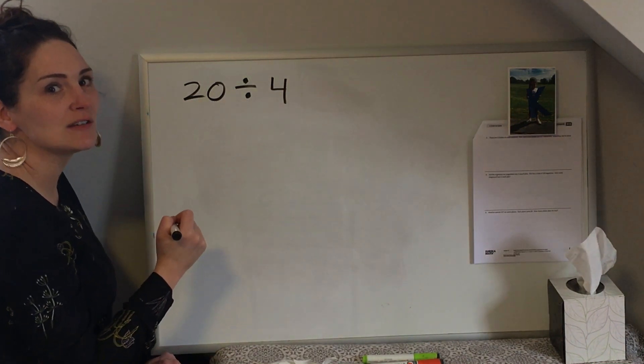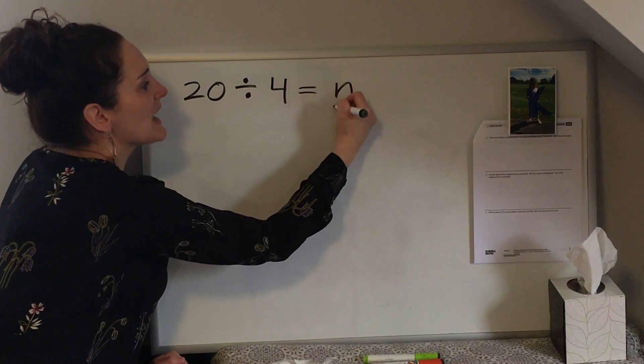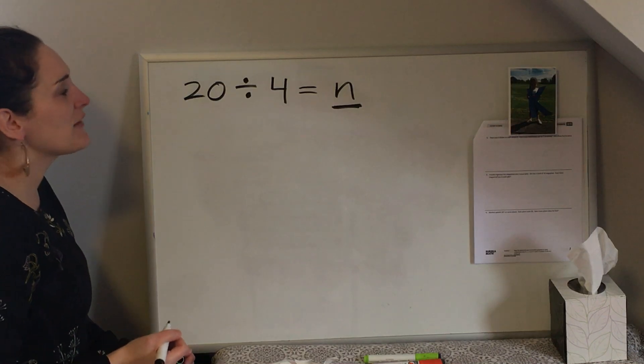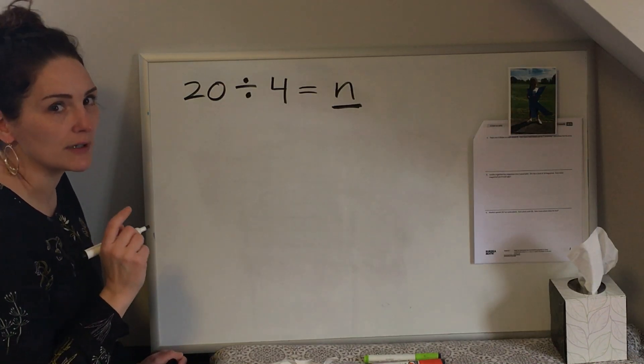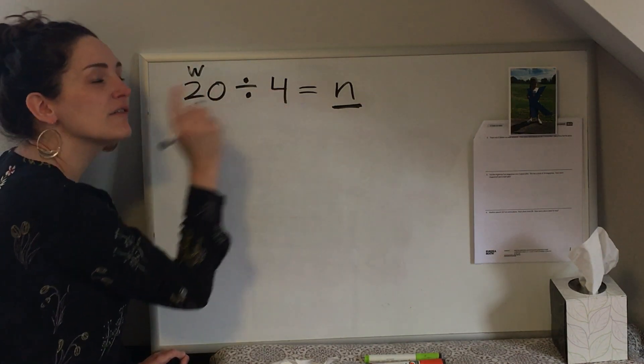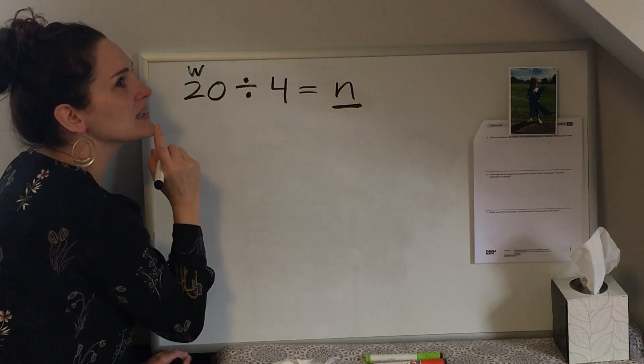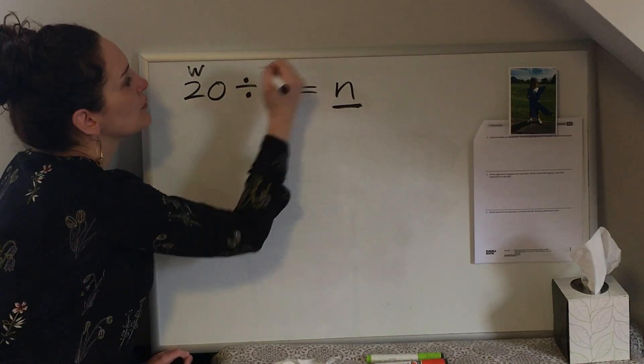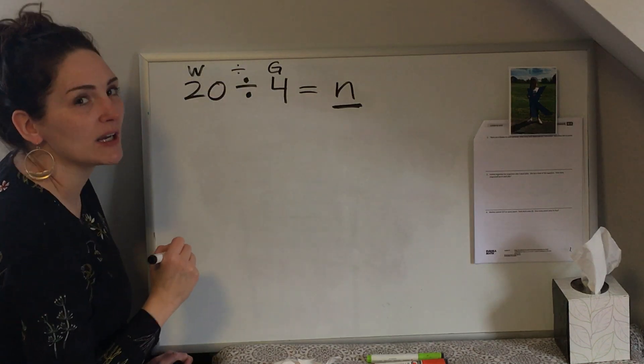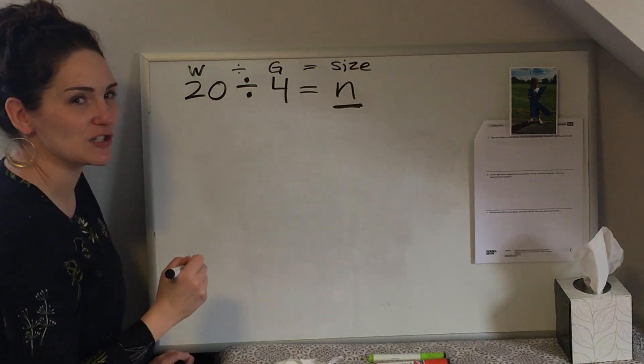So we have 20 pieces of candy divided into four bags and what we need to know is how many candies are in each bag. You have to think about the way that the question is worded. If we know we have 20 which is our whole and we know that we have four bags, I'm going to say to myself oh four bags, oh that must mean I have four groups. So I'm taking my whole and dividing it by my number of groups and what I'm looking for is my size or number in each group.